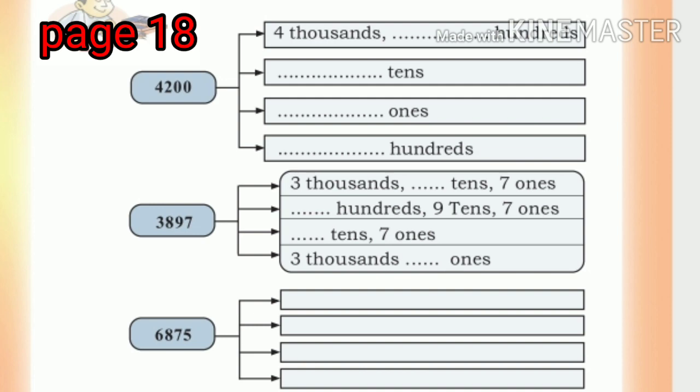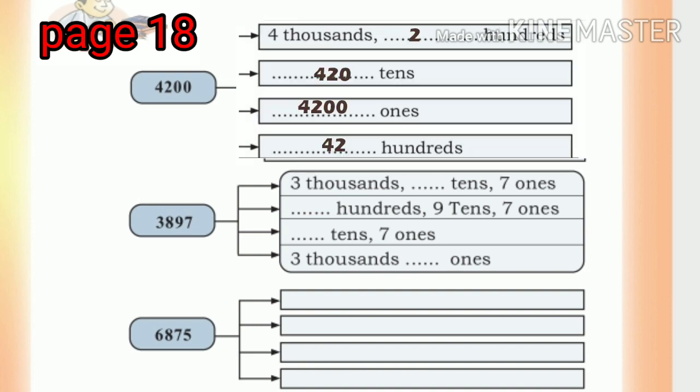Next, write one four-digit number in different forms. 4,200 is four thousands two hundreds, or 420 tens, or 4,200 ones.